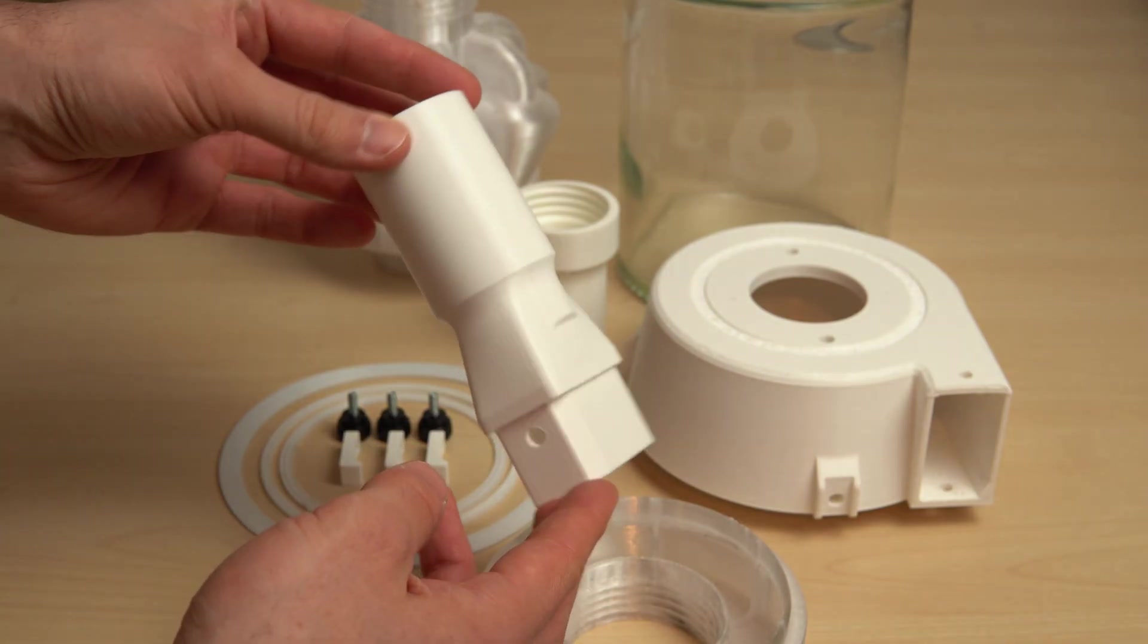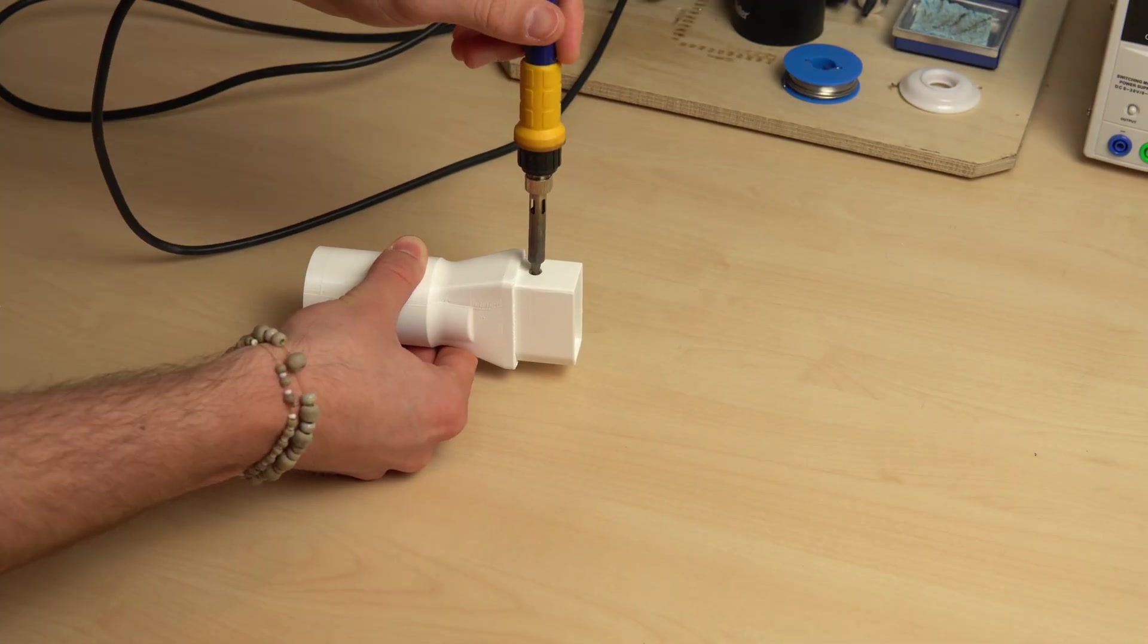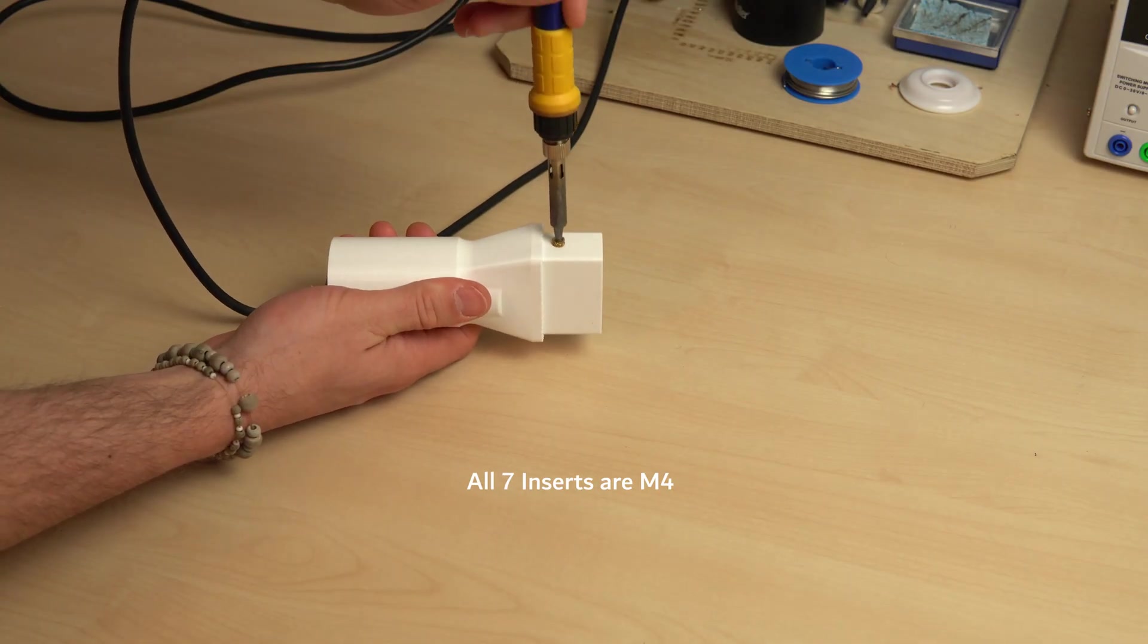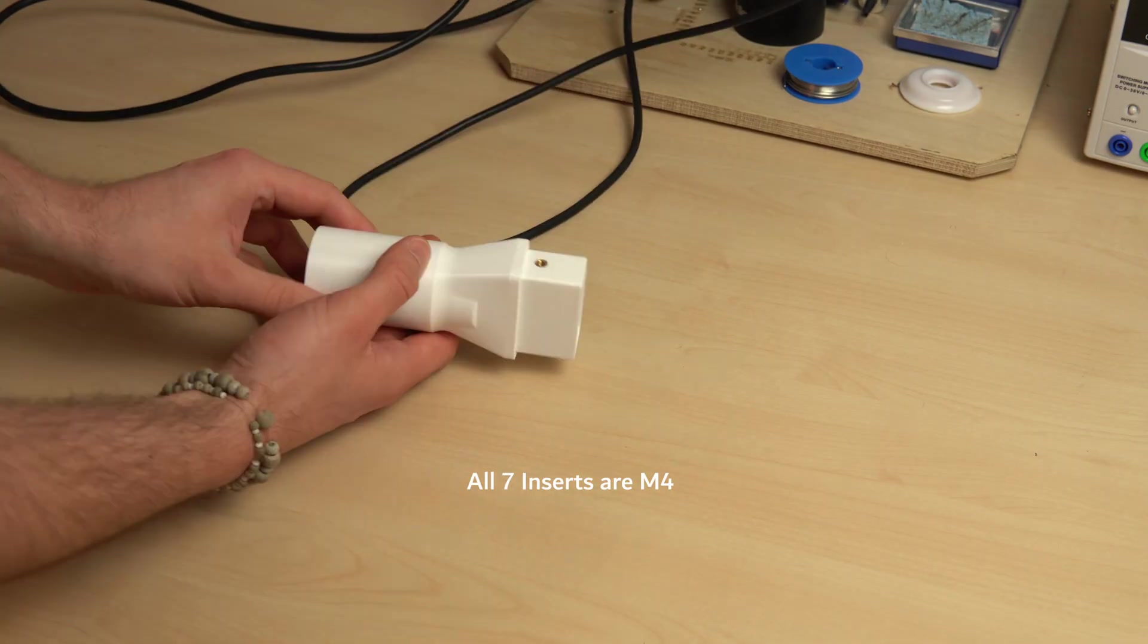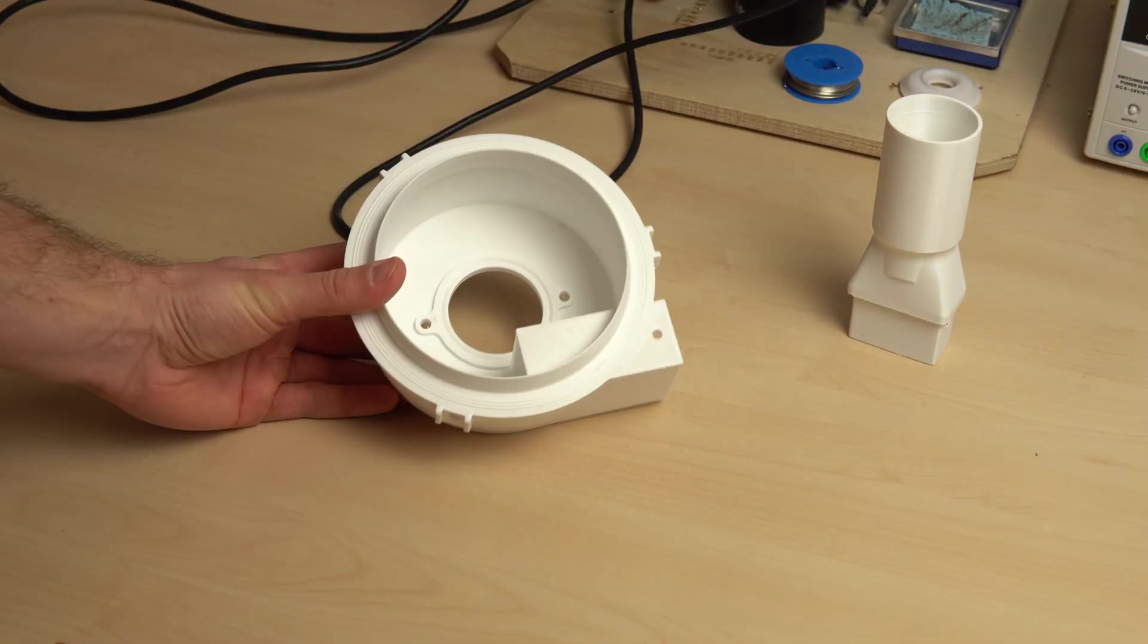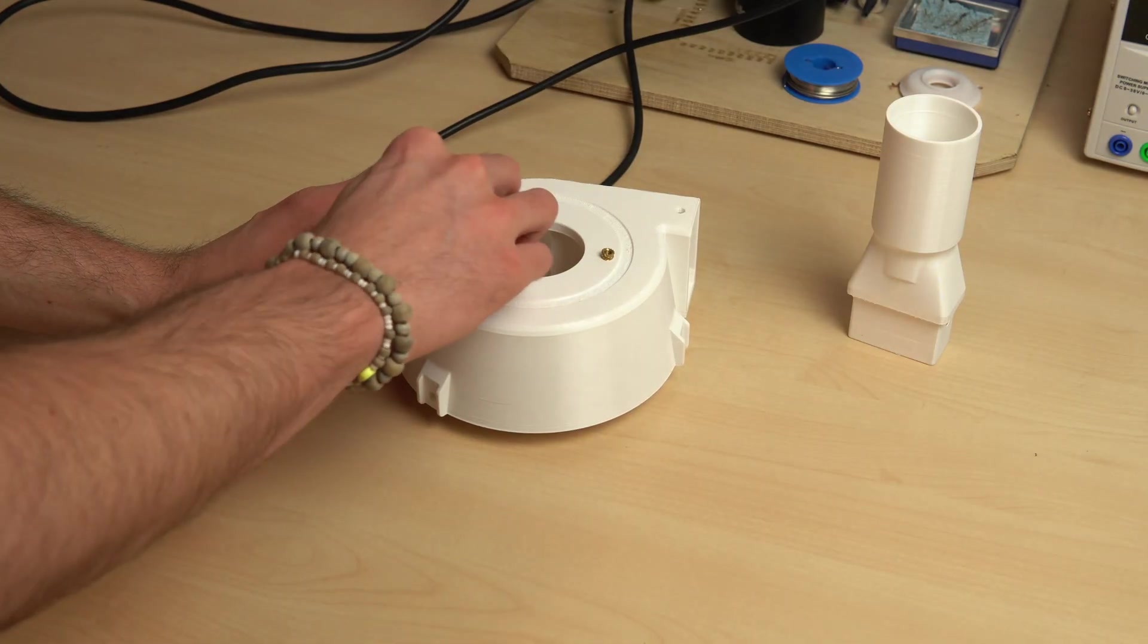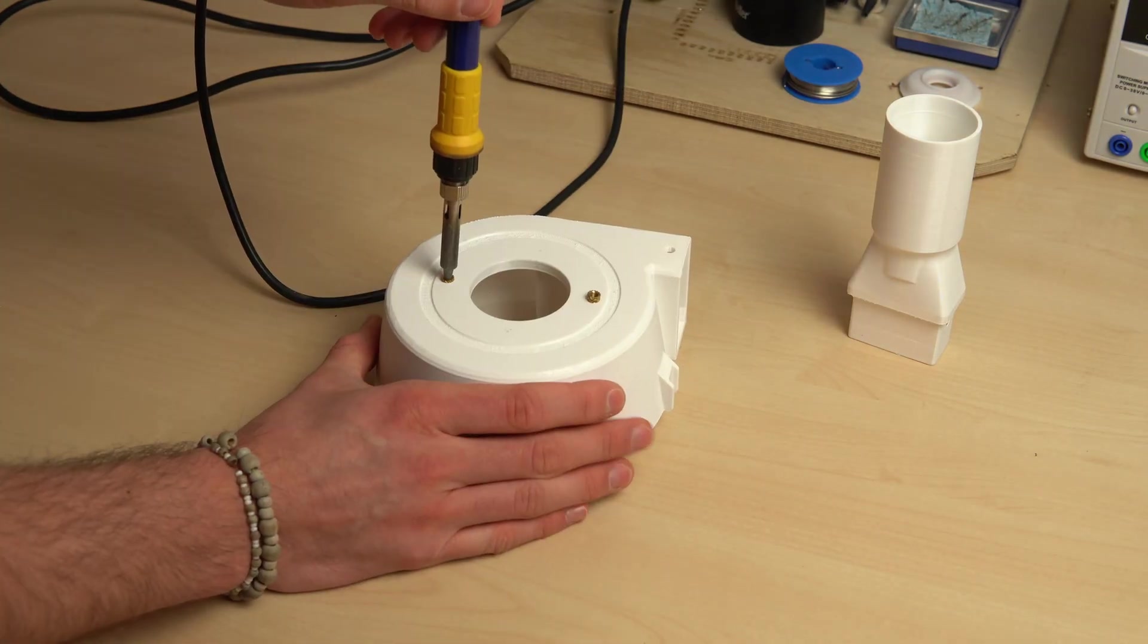Before I start assembling the parts, some of them have to be prepared with heat-set inserts. These are M4 inserts, I got them from CNC Kitchen and they just work super well when you want your parts to be disassembled again easily. I melt them into the parts until they lie flush on the 3D prints and wait until they are cooled down.